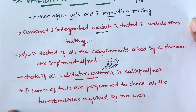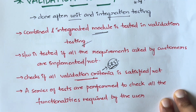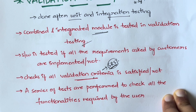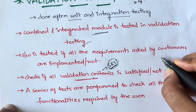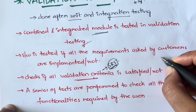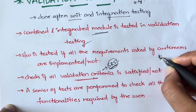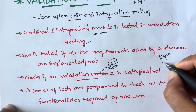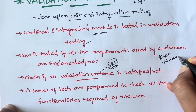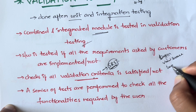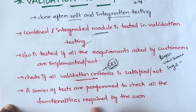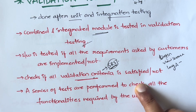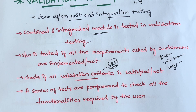For example, if you are developing a student management system, the list of requirements could include: a student should be able to log in, a student should be able to view their score, and they should be able to log their attendance. It checks whether all the validation criteria and specified requirements are satisfied.